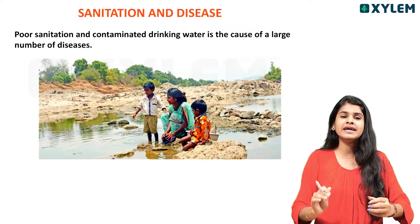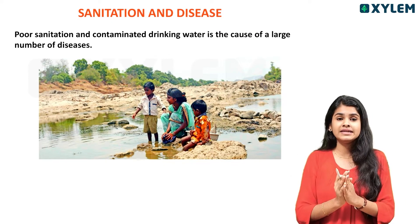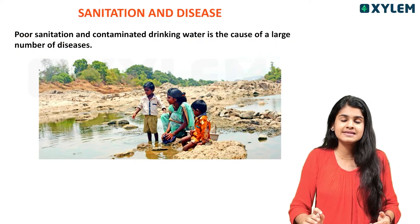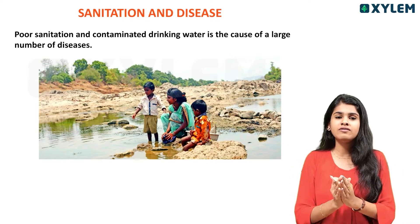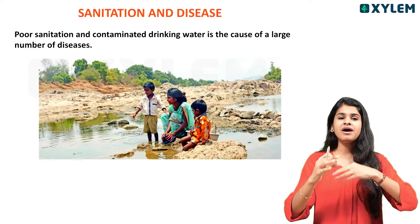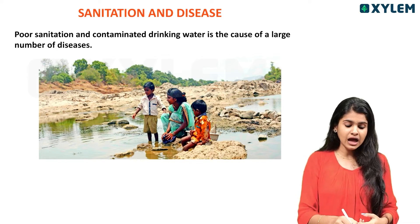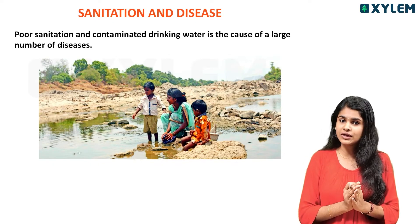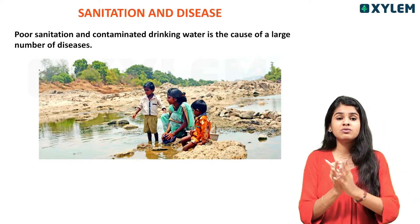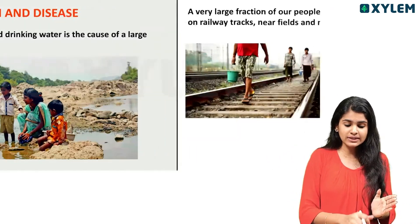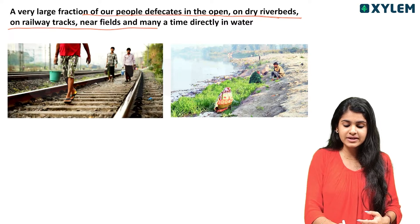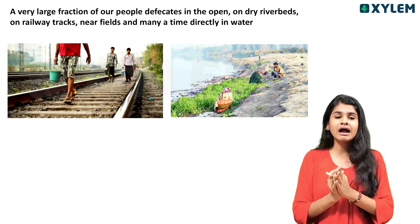Sanitation and disease — our water is polluted. A very large fraction of our population defecates in the open — on dry riverbeds, on railway tracks, near fields, and many times directly in water.